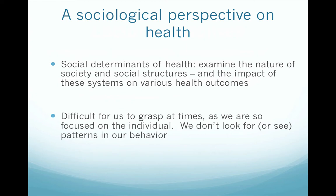A sociological perspective on health: social determinants of health examine the nature of society and social structures and the impact of these systems on various health outcomes. For example, in some societies women face a disadvantage just by virtue of being women — they're more prone to violence, certain illnesses, and a number of conditions because of the value that society places on women. So gender can be one example of a social determinant of health.